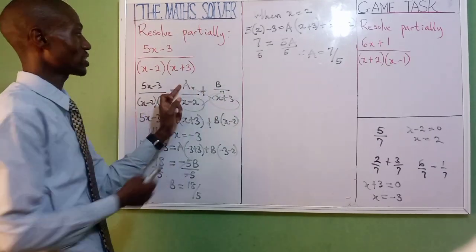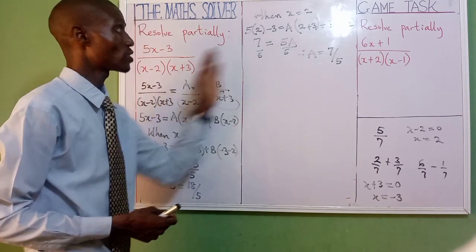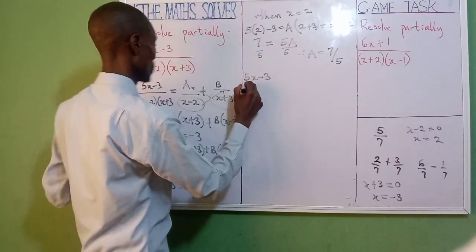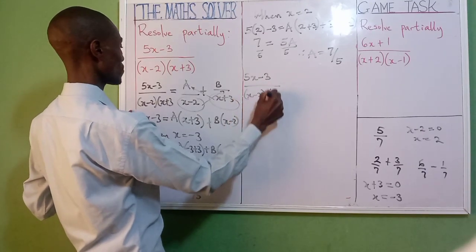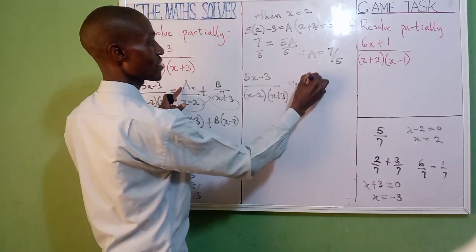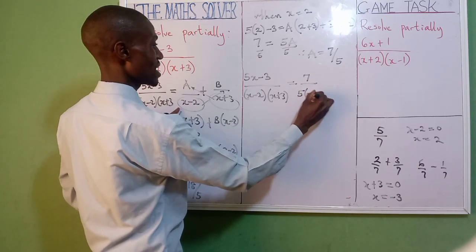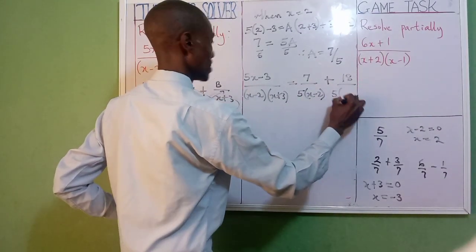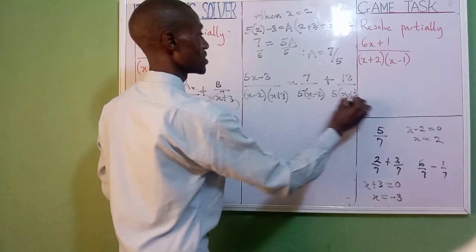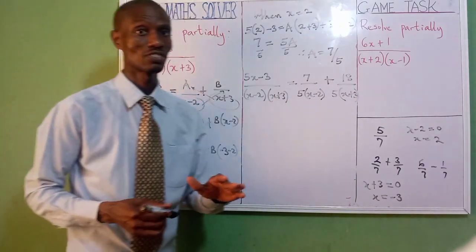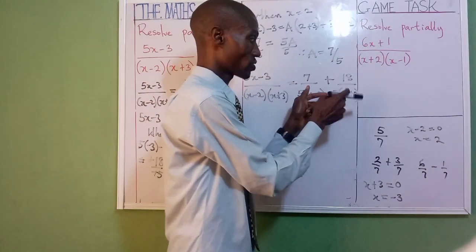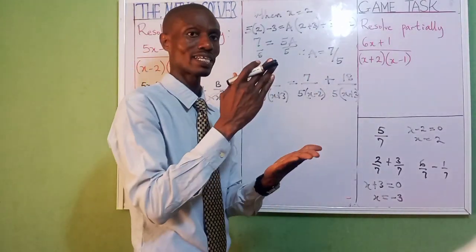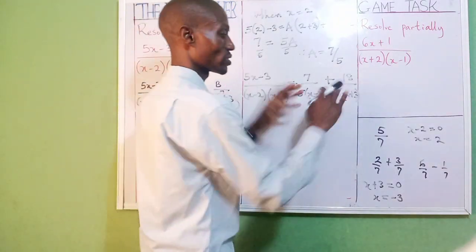You now return it back to where you started. You set your a and b — that was what we used to represent, and that was what we were looking for. Our a is 7 over 5 and our b is 18 over 5. So: 5x minus 3 over (x minus 2)(x plus 3) equals 7 over 5 over x minus 2, plus 18 over 5 over x plus 3. That's partial fraction. By the time you solve this separately, you are going to get this result — you have resolved it partially, you have split it.